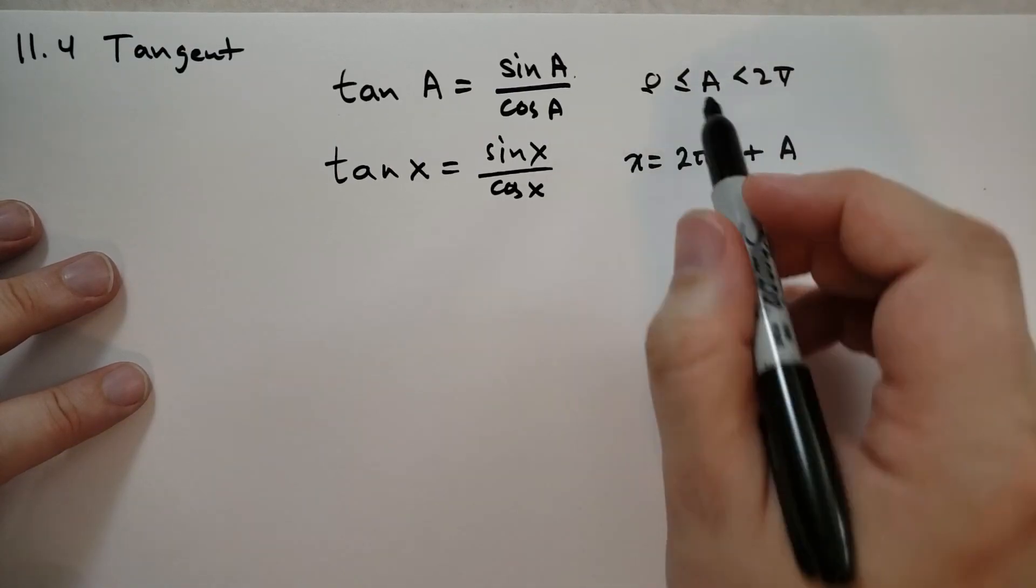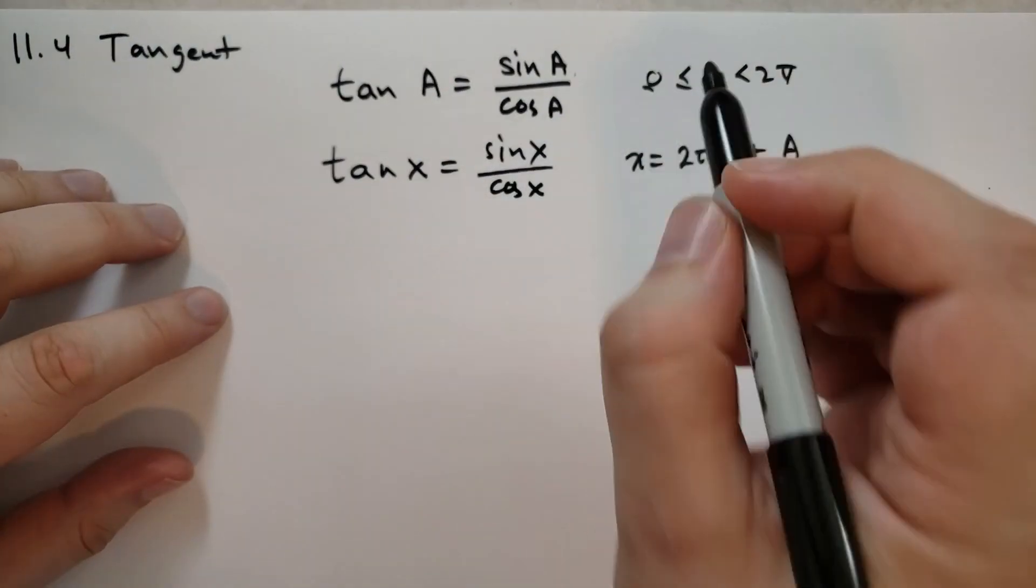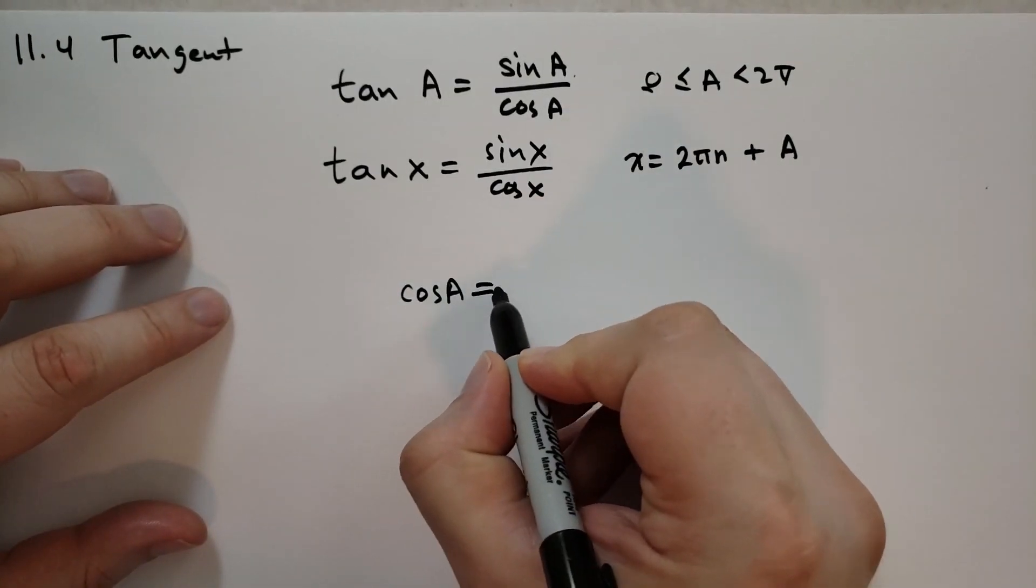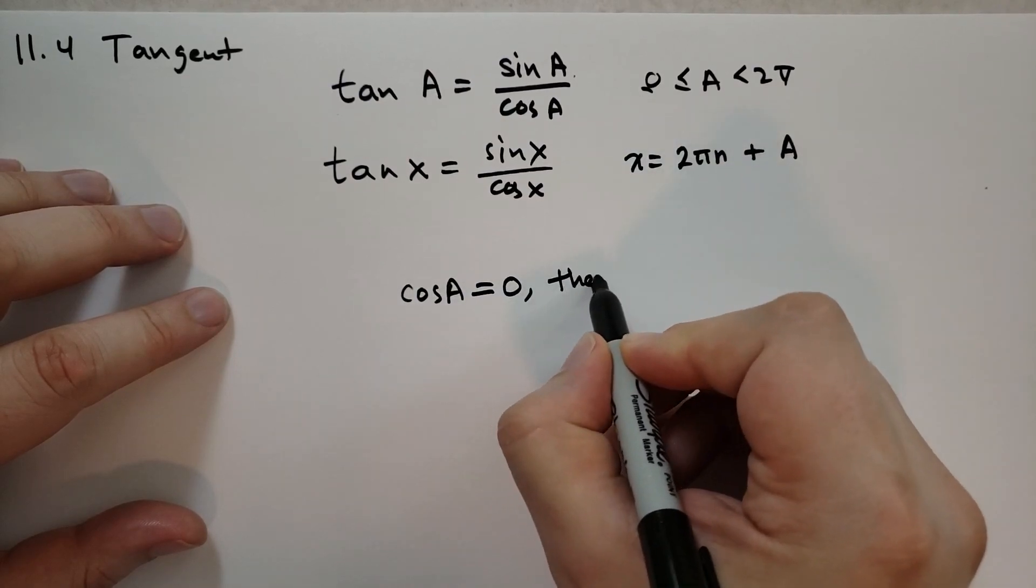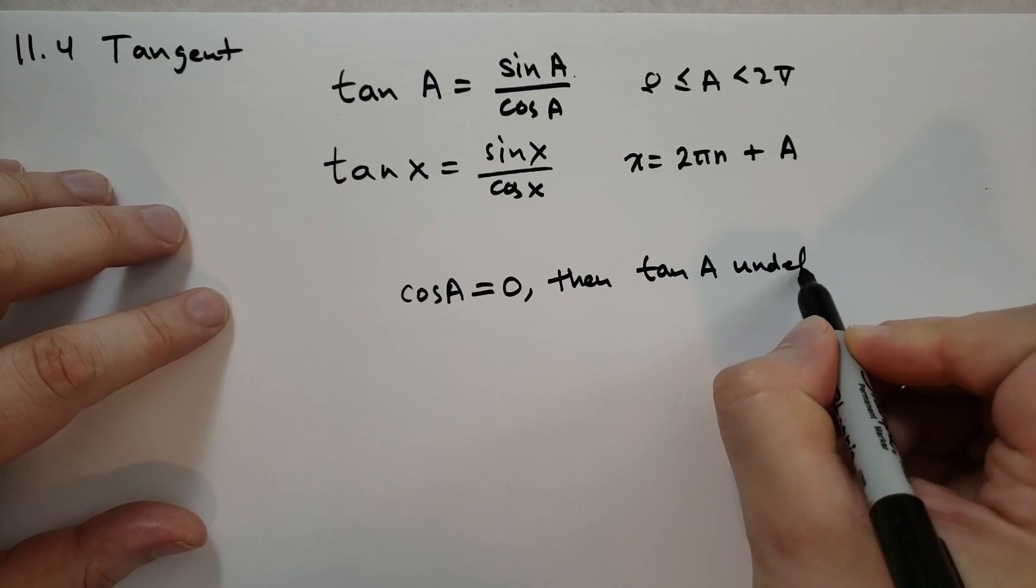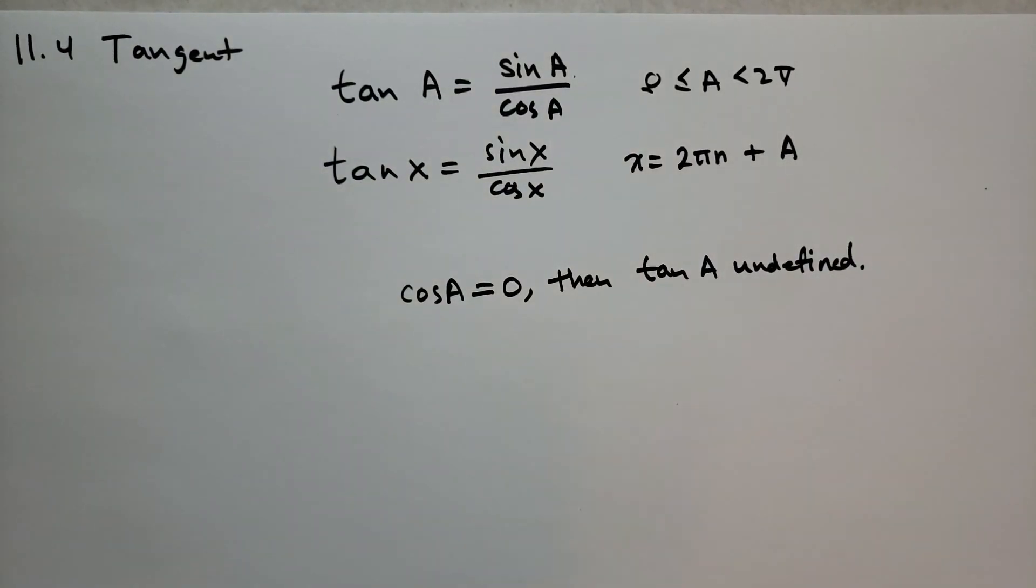This obviously works as long as cosine of A is not equal to zero. So if cosine of A is equal to zero, then we say the tangent of A is undefined. And you'll see what that means later.